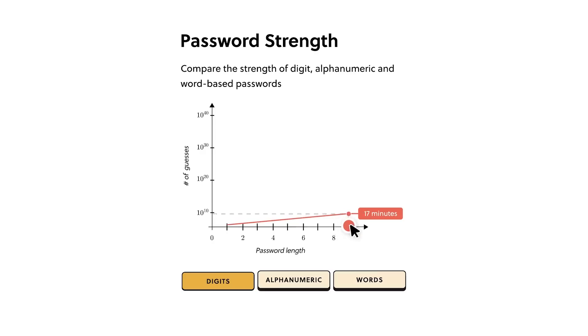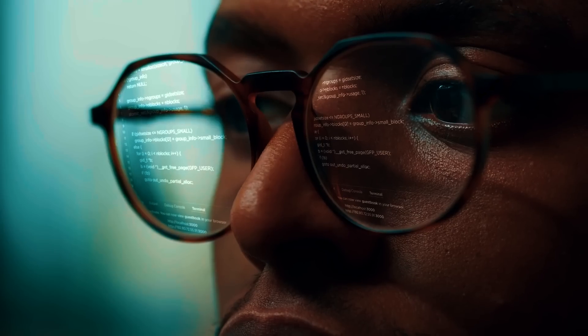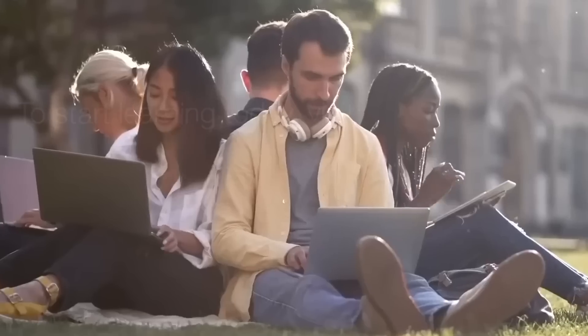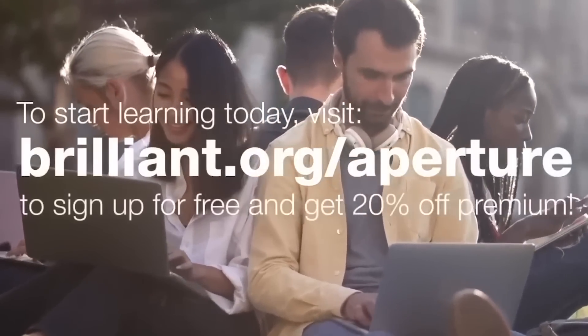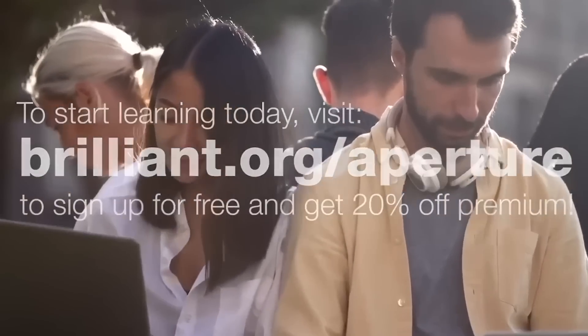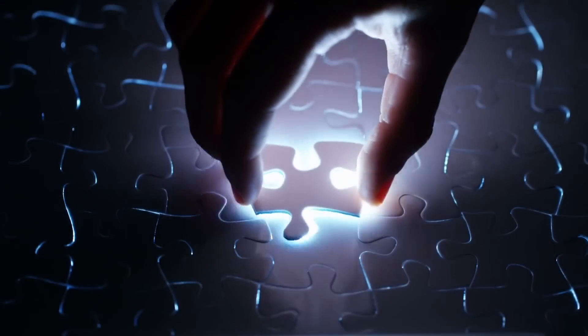To try out the How Large Language Models Work course and all the other courses completely free for 30 days, go to brilliant.org slash aperture or click the link in the description. The first 200 people to visit also get 20% off a premium subscription, which unlocks every single course Brilliant has to offer.